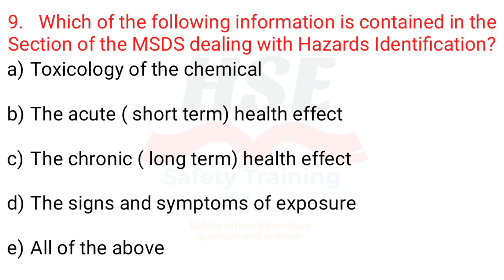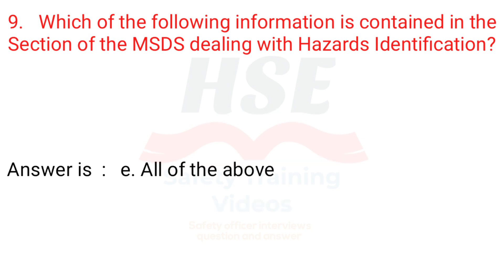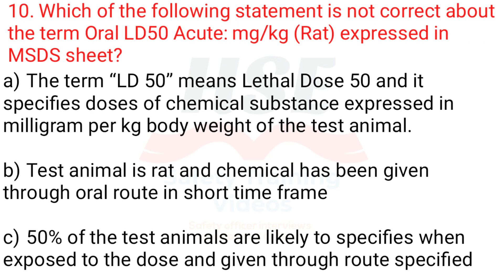Question 9: Which of the following information is contained in the section of the MSDS dealing with hazards identification? A. Toxicology of the chemical, B. The acute, short-term health effect, C. The chronic, long-term health effect, D. The signs and symptoms of exposure, E. All of the above. The answer is E. All of the above.